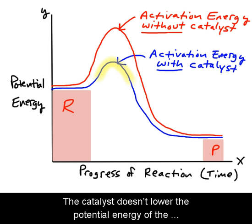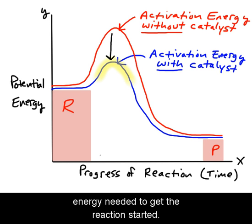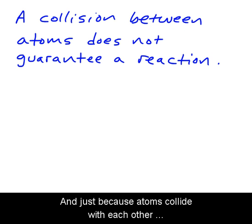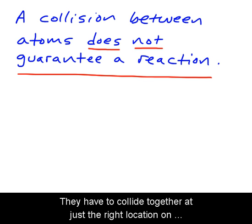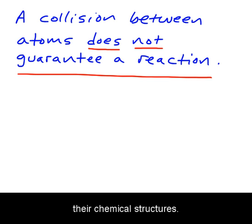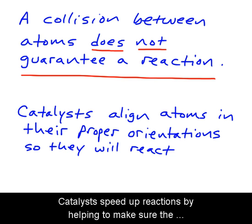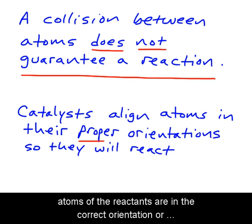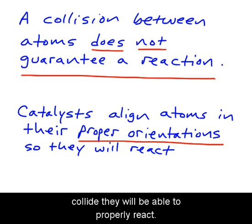Notice that the difference in potential energy between the reactants and products is the same with or without the catalyst. The catalyst doesn't lower the potential energy of the reactants — it just lowers the activation energy needed to get the reaction started. And just because atoms collide doesn't necessarily mean a reaction will occur; they have to collide at just the right location on their chemical structures. Catalysts speed up reactions by helping to ensure the reactants are in the correct orientation or position relative to each other, so that when they collide they will be able to properly react.